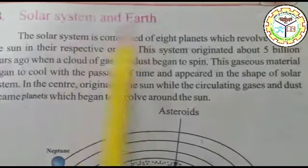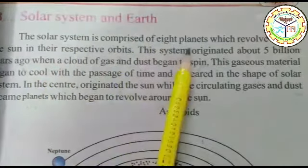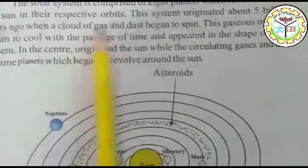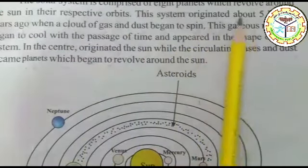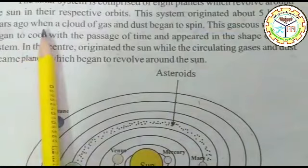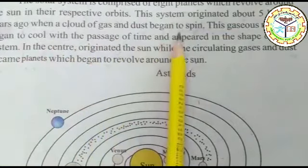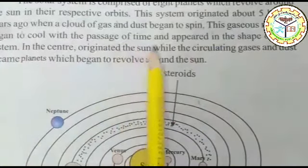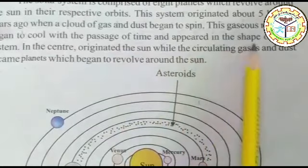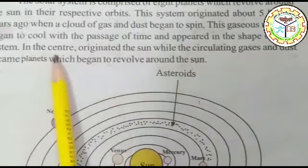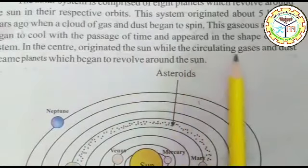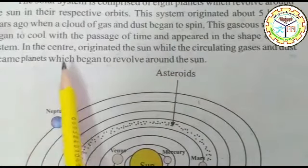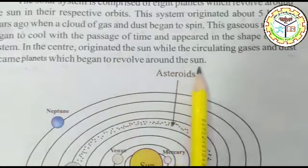The solar system is comprised of 8 planets which revolve around the sun in their respective orbits. The system organized about 5 million years ago when a cloud of gas and dust began to spin. This gaseous material began to cool with the passage of time and appeared in the shape of the solar system. In the center formed the sun, while the circulating gases and dust became planets which began to revolve around the sun.